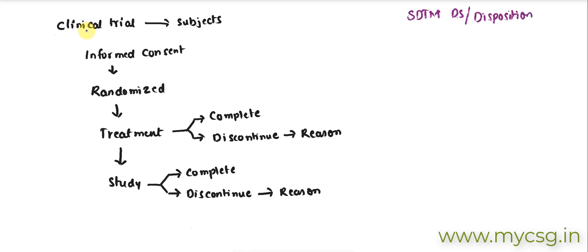Let's say there is a clinical trial in which the subjects will go through the following flow. They will first sign the informed consent to participate in the clinical trial, and then if they meet all the eligibility criteria they would be randomized. Once randomized, they will continue further into the treatment. For treatment, they may choose to complete or they may choose to discontinue anywhere in between, and similarly the subject may choose to complete or discontinue the study at any point during its duration.